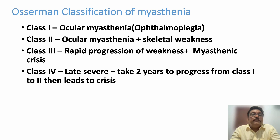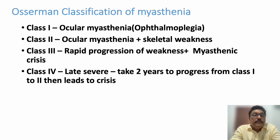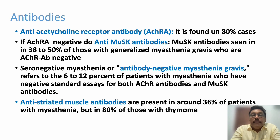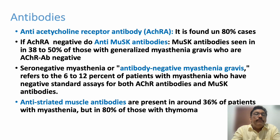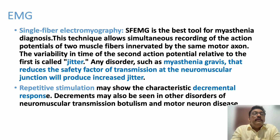This is called the Tensilon test. The Osserman classification of myasthenia: Class 1 — ocular myasthenia with ptosis and ophthalmoplegia; Class 2 — ocular myasthenia with skeletal muscle weakness; Class 3 — rapid progression of weakness, myasthenic crisis; Class 4 — late severe, takes two years to progress. Antibodies tested in blood: anti-acetylcholine receptor antibodies are seen in 80% of cases, anti-MuSK antibodies in 30–50%, and striated muscle antibodies in about 36%. Some patients have no detectable antibodies — antibody-negative myasthenia gravis.